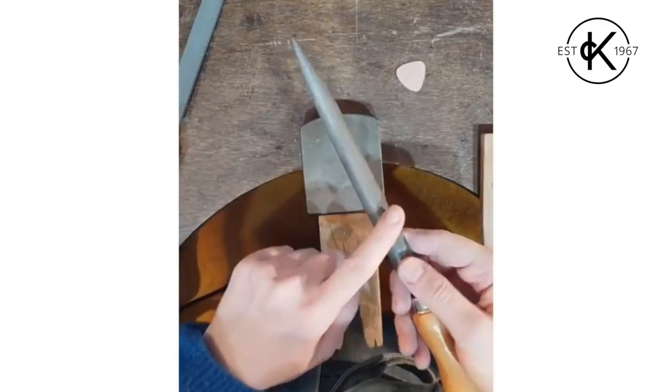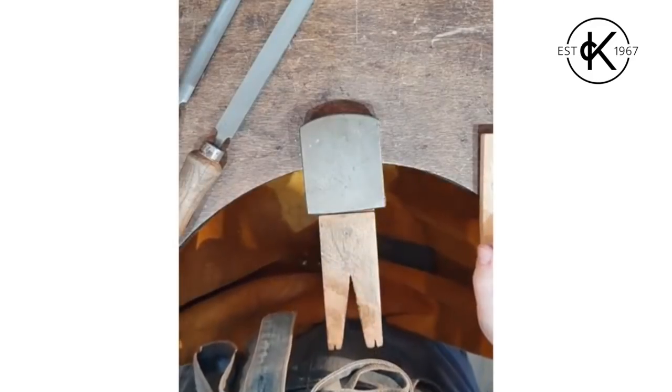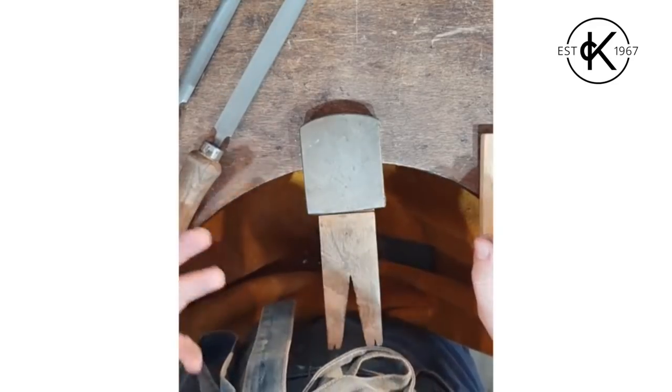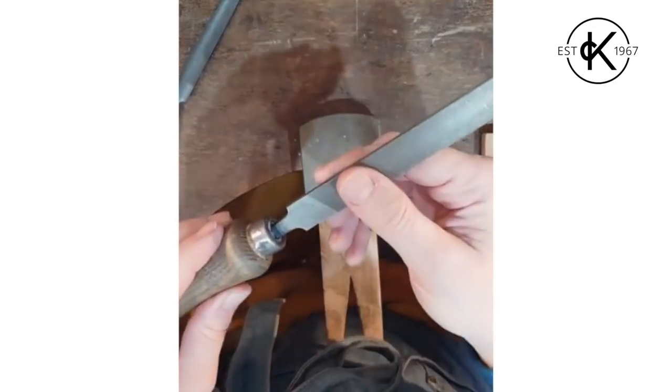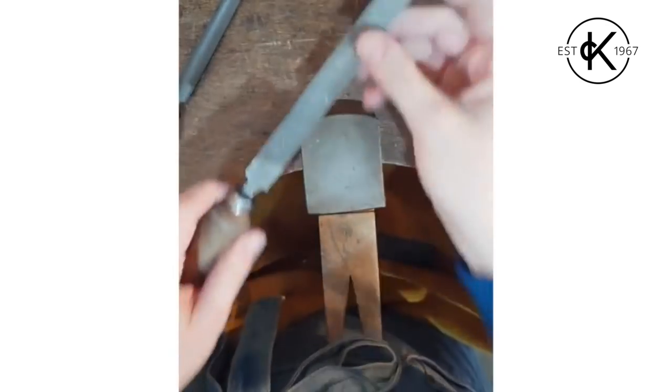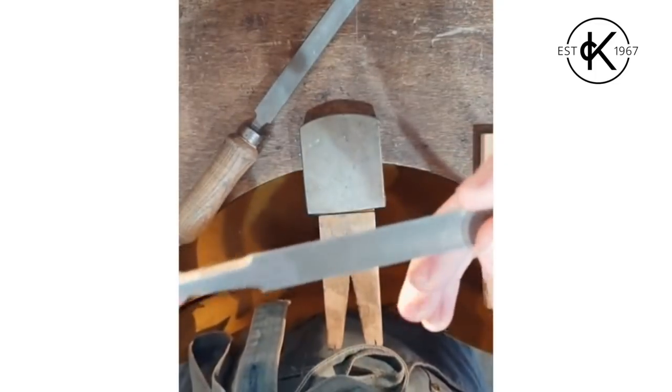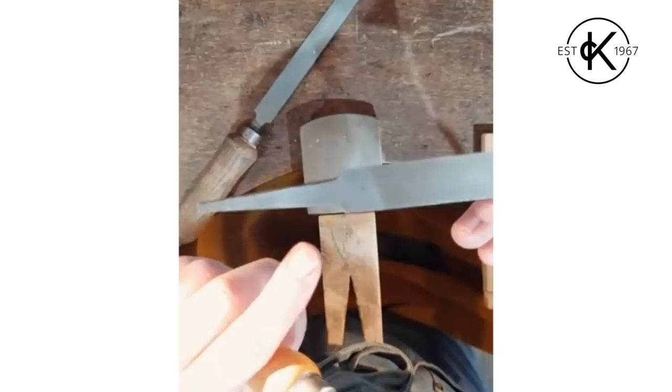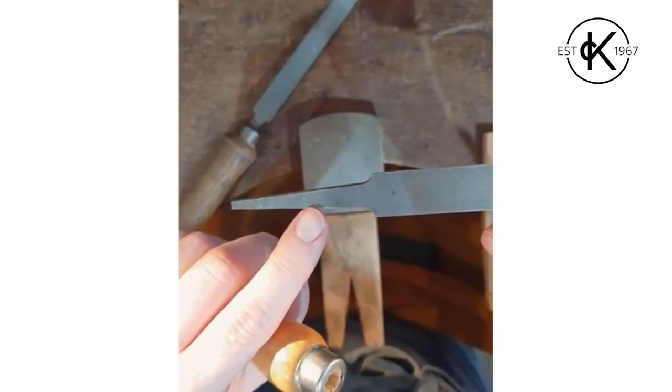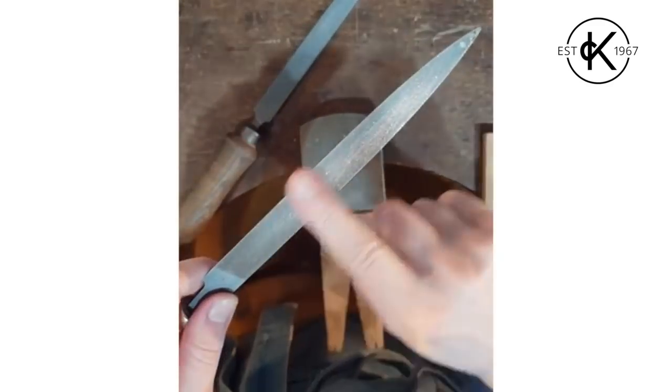But it's really important you don't try and file flat things with a round surface. Now depending on whether your files are American pattern or Swiss pattern, if you want a smooth file they'll sometimes be called smooth, or if they're Swiss they'll have a number attributed to them. So this is a number 4, and it's down here. A 4 means that it's a nice smooth file.